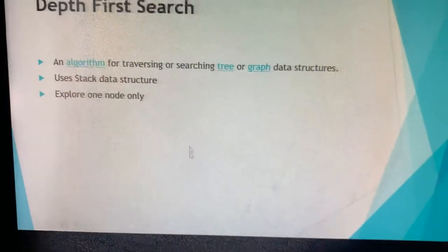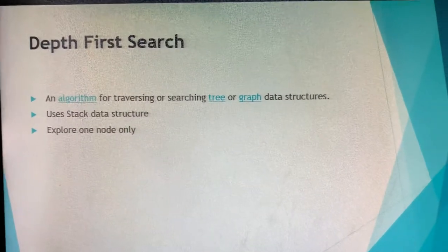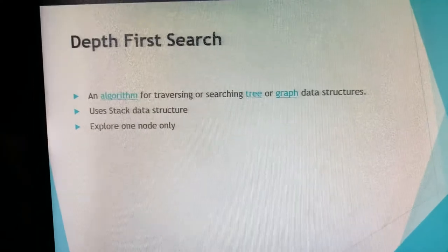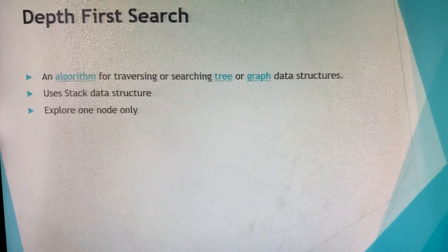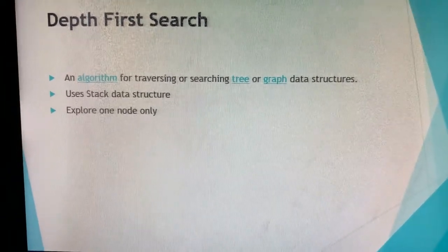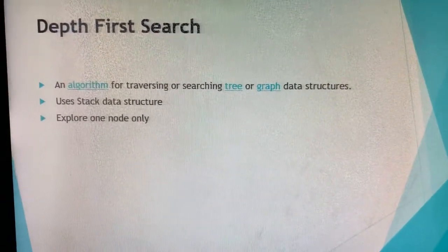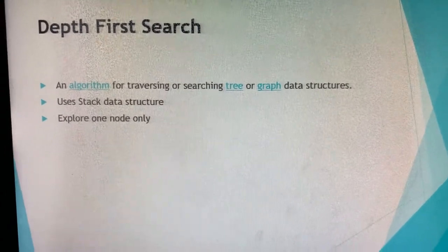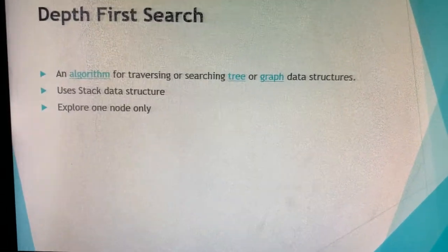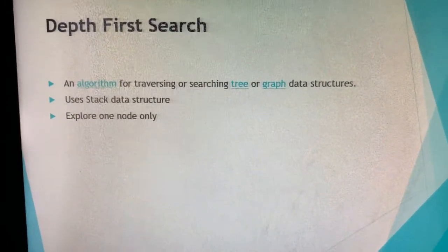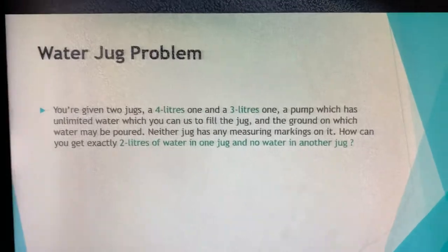First let me explain what depth first search is. Depth first search is an algorithm for traversing or searching tree or graph data structures. It goes down like a tree, like a branching structure. The second point is it uses a stack data structure. The third point is it explores only one node — since it goes like a branch with many options, for depth first search we only focus on one node.